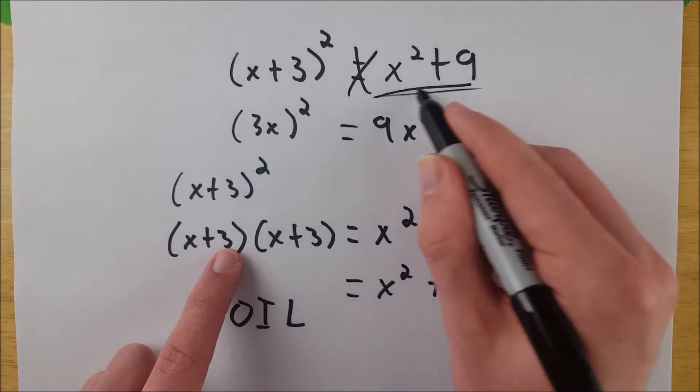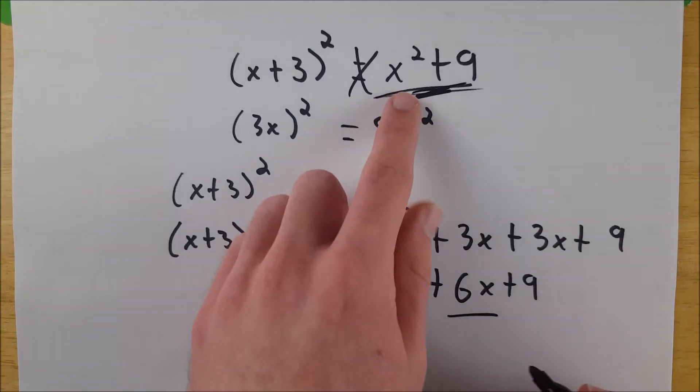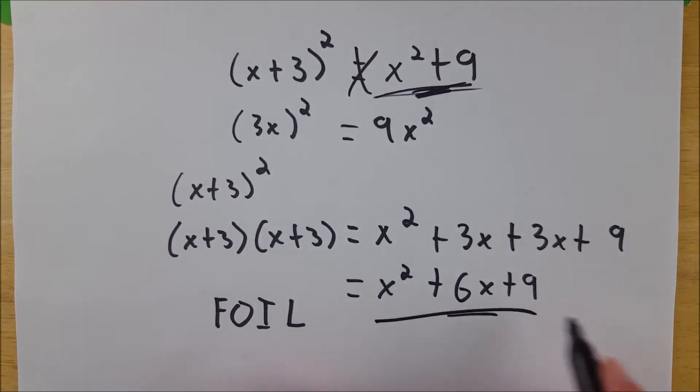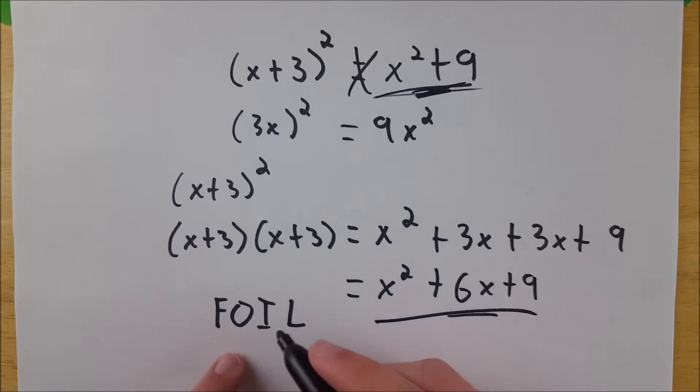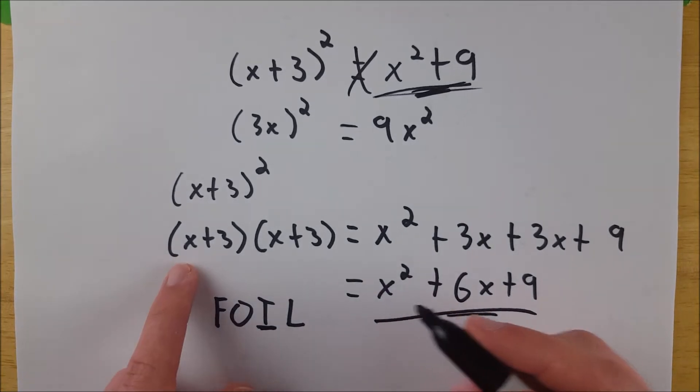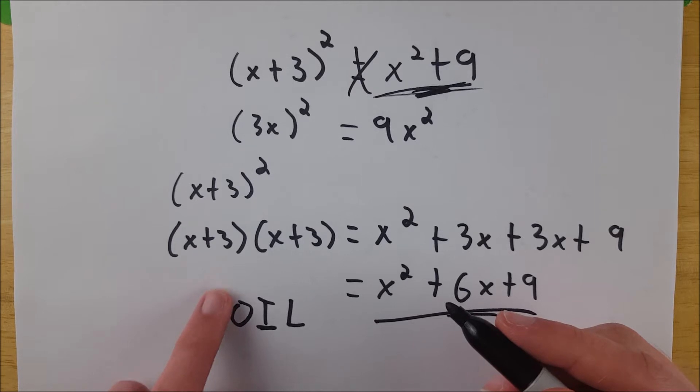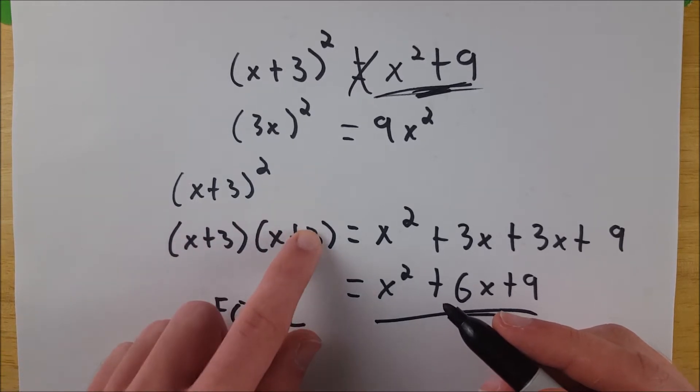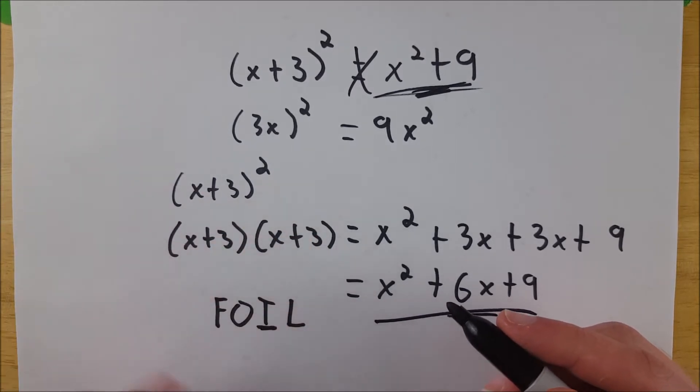And you can see what we missed. We missed the 6x, which is why this is wrong. This is right. This is how to properly FOIL. You can think of it like this or just think about it using your distributive property. You know, you've got to distribute the x throughout and you've got to distribute the 3 throughout.